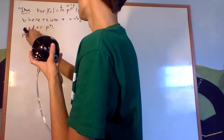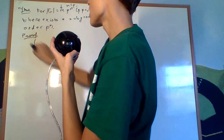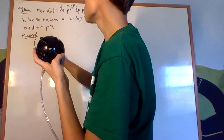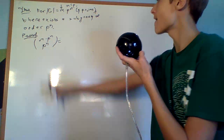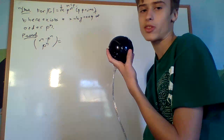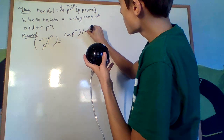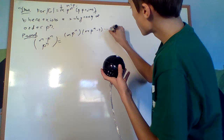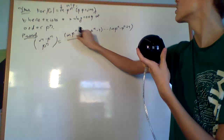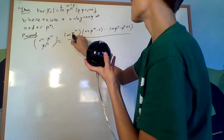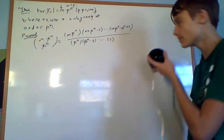Okay, proof. What we do is we first look at what m times p to the n choose p to the n is. The permutation where you have m times p to the n things and you're choosing p to the n and you don't care about the order. So remember back to the definition: it's going to be mp to the n times mp to the n minus 1, all the way up until mp to the n minus p to the n plus 1, divided by p to the n times p to the n minus 1 all the way down to 1.